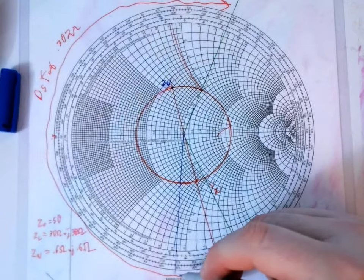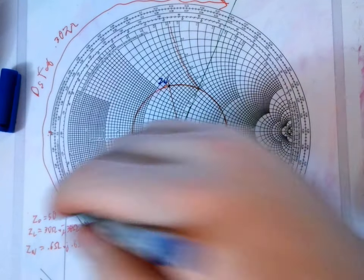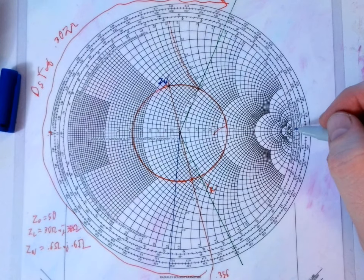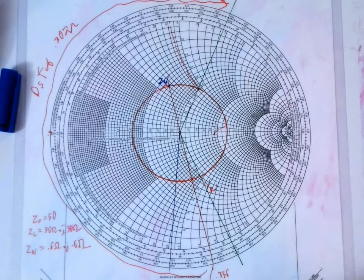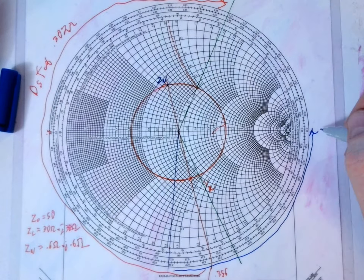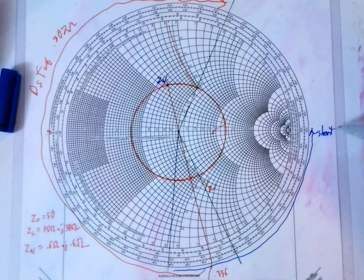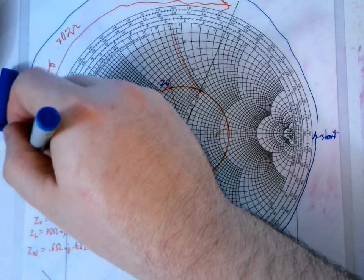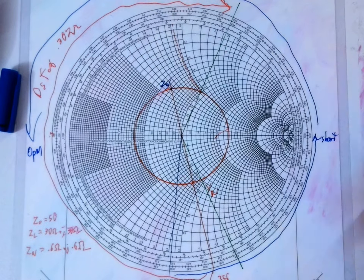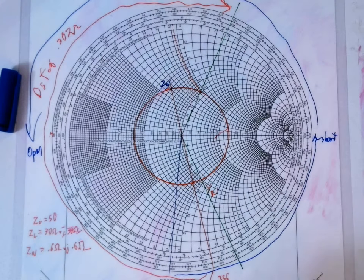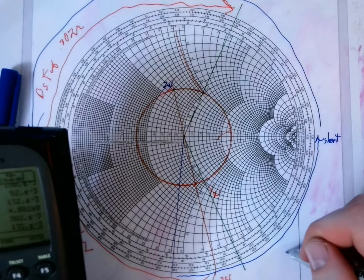Now, for admittance, when we're going for the open stub and the short stub, we're still going to go this way. But, because admittance is flipped, this here, which is an open for a series stub, is going to be a short for a parallel stub. So, if I go from here to here, that will give me my shorted parallel stub. And if I continue on all the way over to here, that will give me my open parallel stub. And I'll just run some numbers on this real quick. 0.25 minus 0.118, so I got a length for a shorted of 0.132.